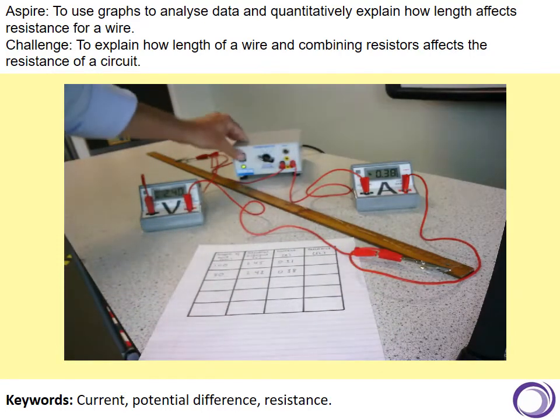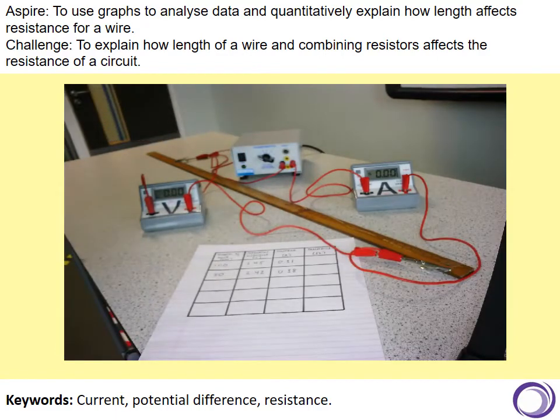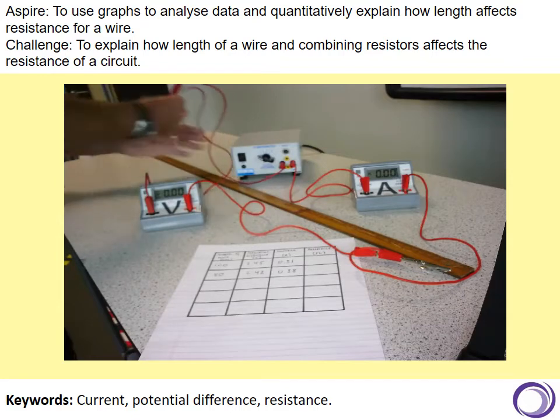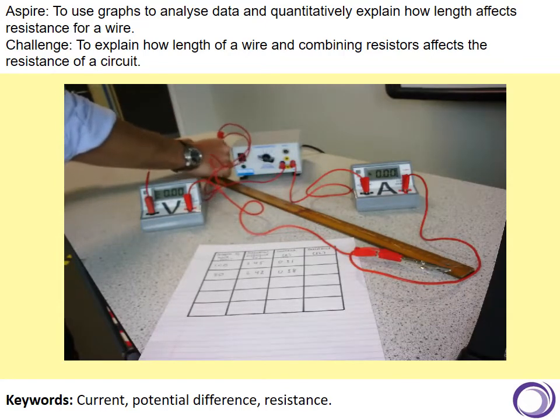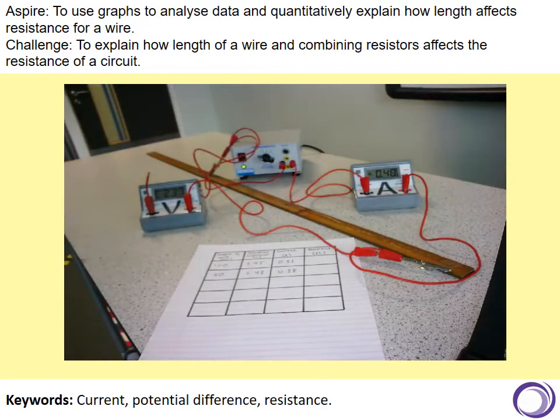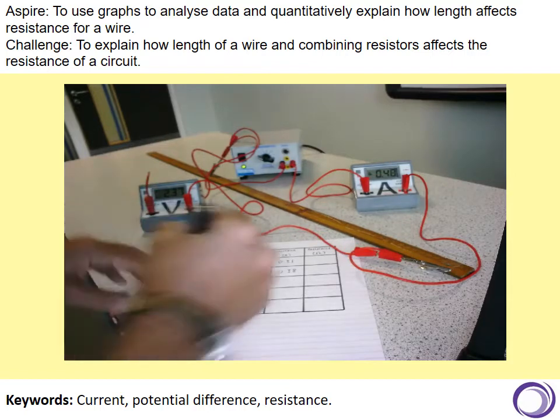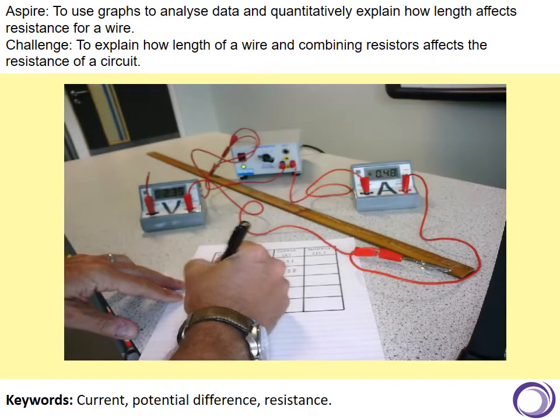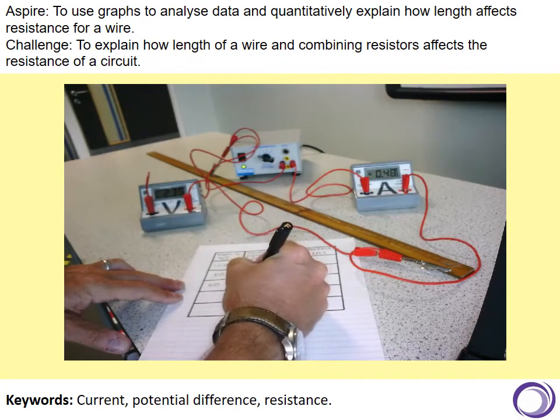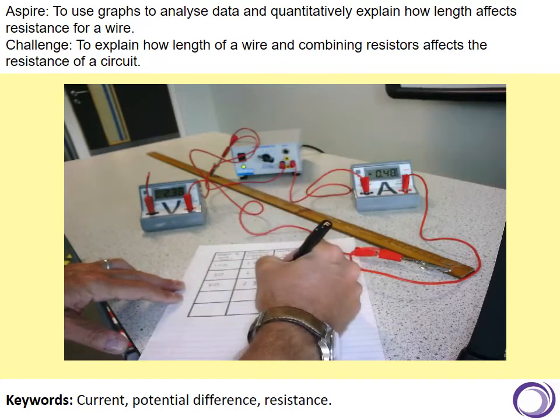We then turn the power pack off, and then we move the crocodile clips another 20 centimeters down to 60. We turn the power pack off. So, if we move on, we've got 60 centimeters, we've got a voltage reading of 2.38 and a current reading of 0.48.